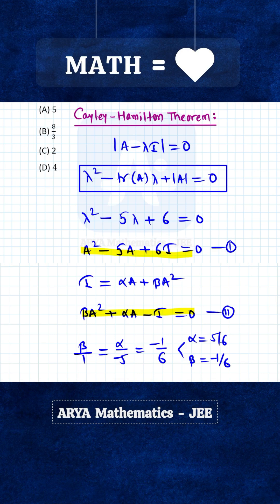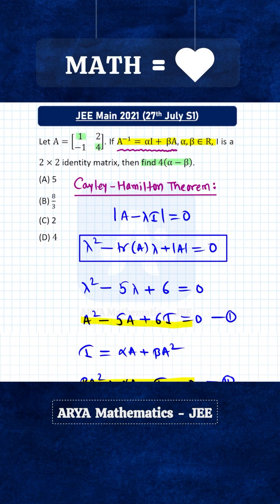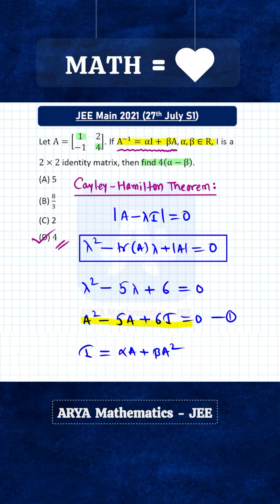α - β equals 1. We had to find 4α - β, so this will be 4, and the correct answer for this problem is option D.